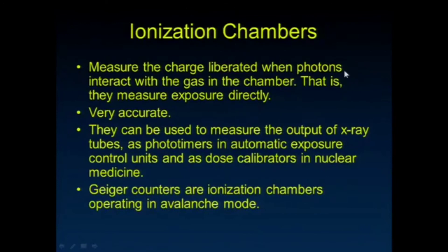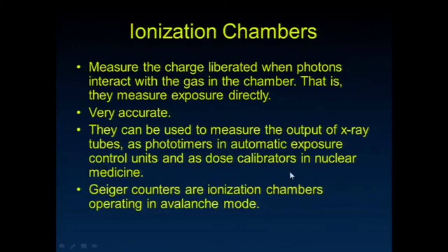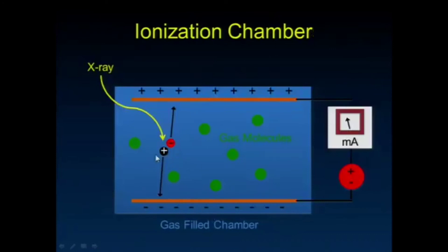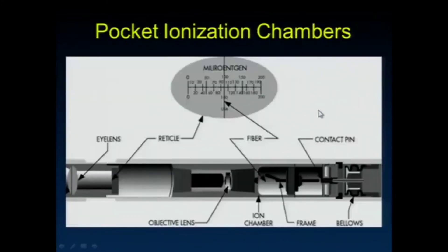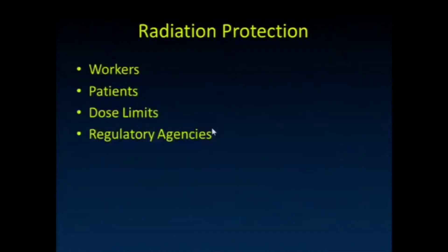Ionization chambers measure the amount of charge liberated when photons interact with gas in the chamber — we talked about this earlier when measuring exposure, where that gas was just air. They're quite accurate and can be used to measure the output of x-ray tubes, as photomultipliers in automatic exposure control units, and as dose calibrators in nuclear medicine. Geiger counters are ionization chambers operating in avalanche mode — the voltage across the plates is much higher, so any single ionization event produces an avalanche of electrons. There's also a small pocket ionization chamber where you look through an eyepiece to measure radiation.